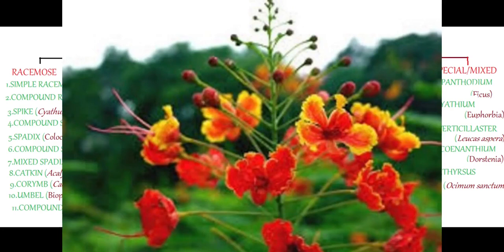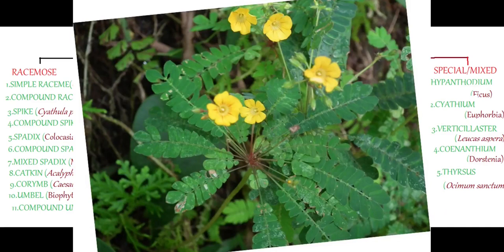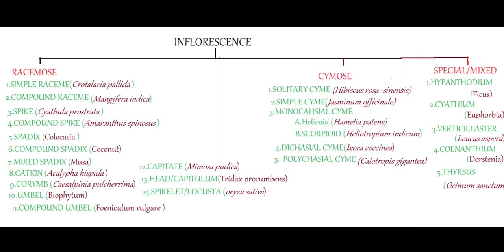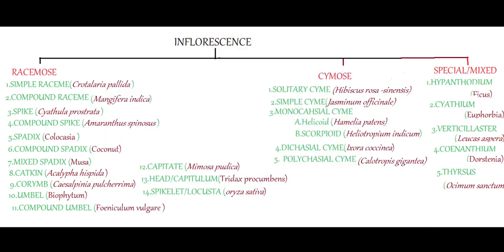The next one is corymb inflorescence. Here the inflorescence axis is not much elongated, and the stalks of the flowers are longer as they are placed lower in the inflorescence axis, so that all flowers appear more or less at the same level. Example: Caesalpinia pulcherrima. The tenth one is umbel inflorescence — the characteristic inflorescence of Umbelliferae. Here the inflorescence axis is very much shortened, and a number of flowers with similar stalks appear to form a cluster, with flowers formed centripetally. Example: Biophytum. A branched umbel is called compound umbel. Example: Foeniculum vulgare.